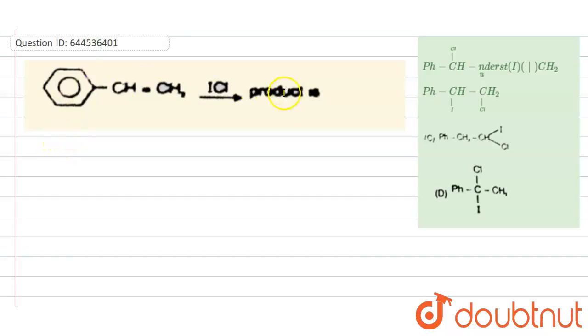This following reaction is given: this is your styrene, this is actually your styrene reacting with ICl, that is iodochlorination is happening, and we need to find out the product. During iodochlorination it will be broken into I plus and Cl minus.